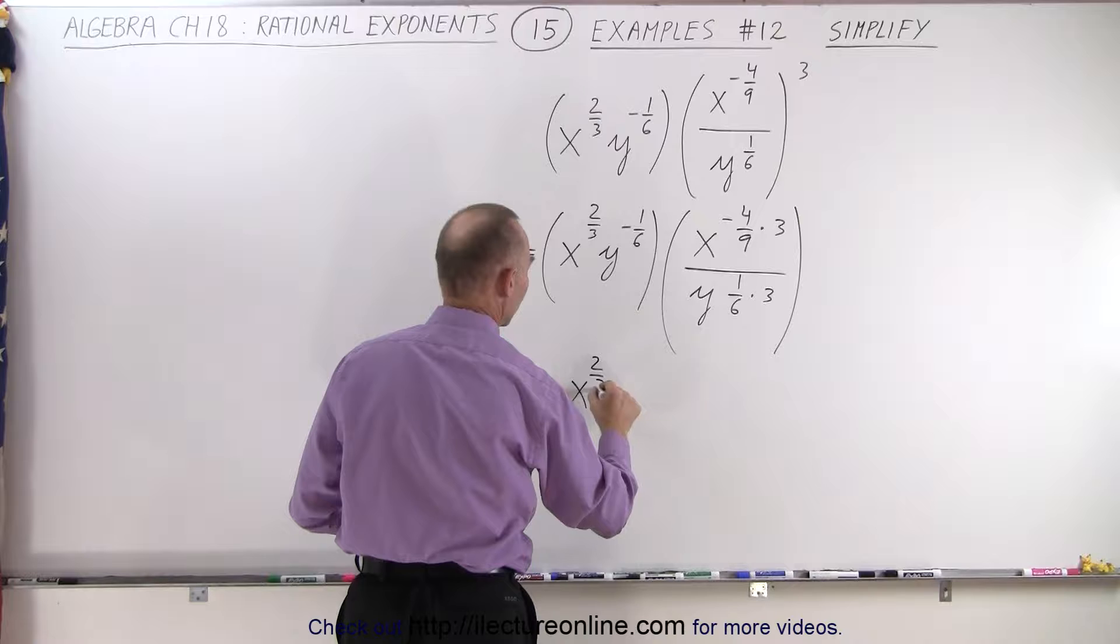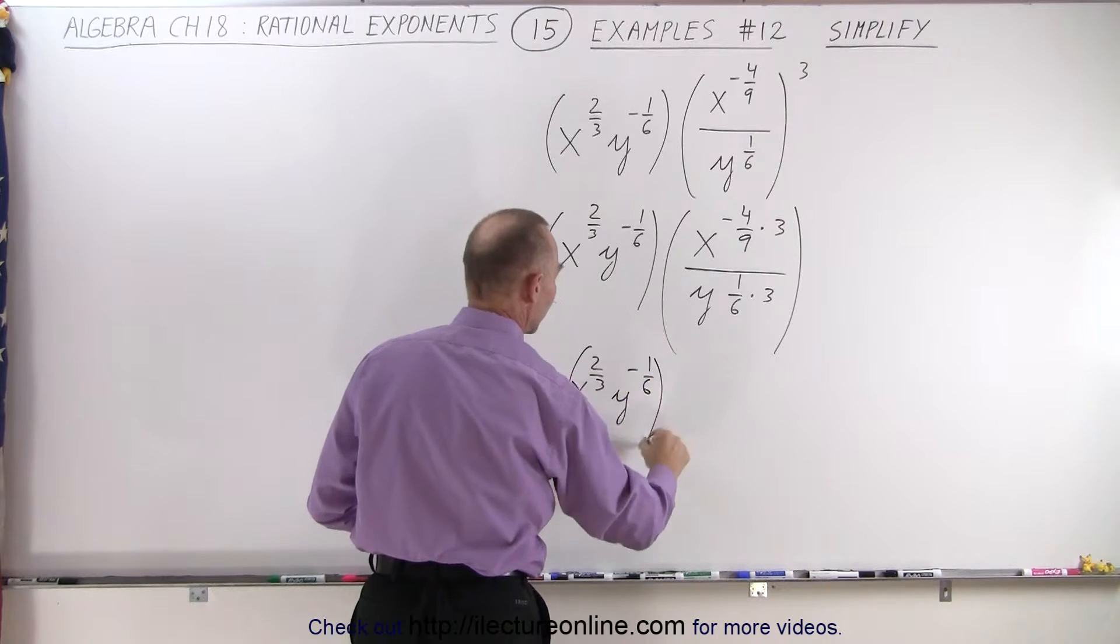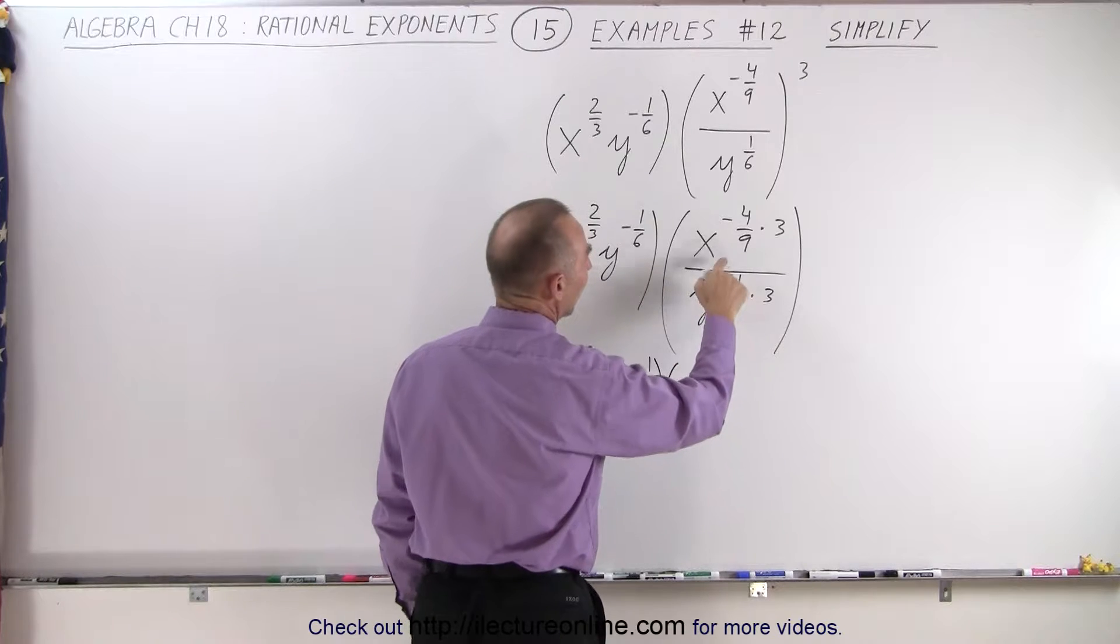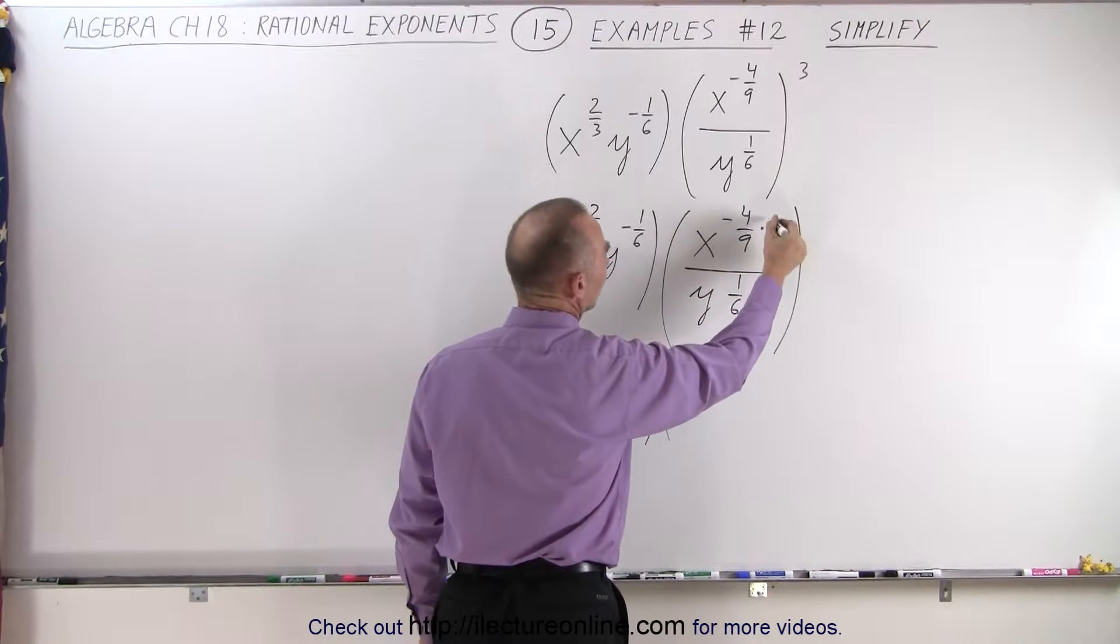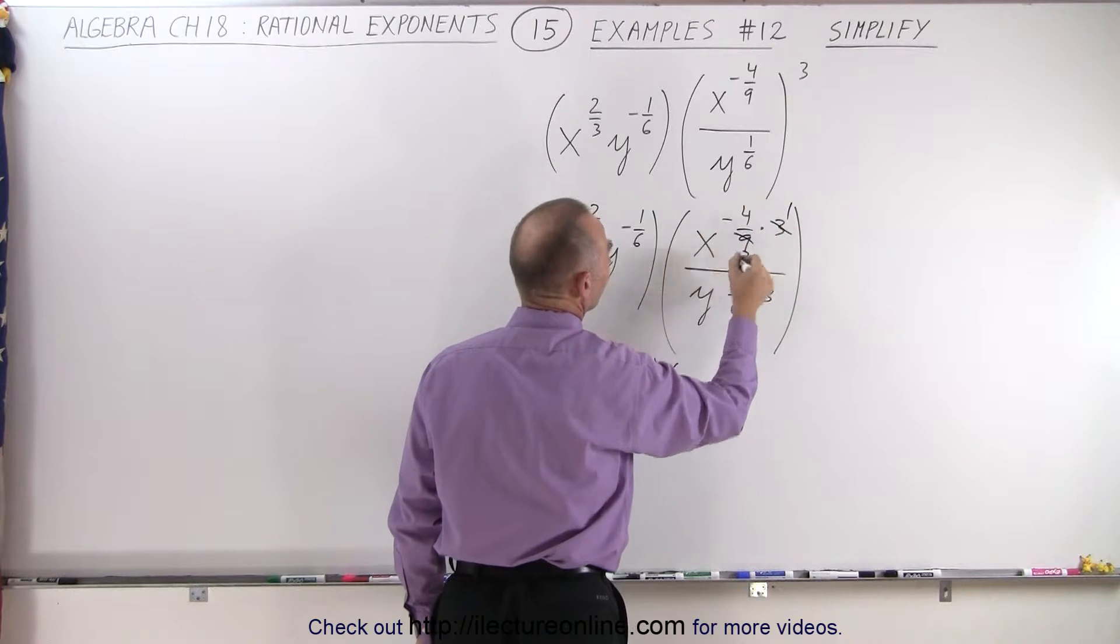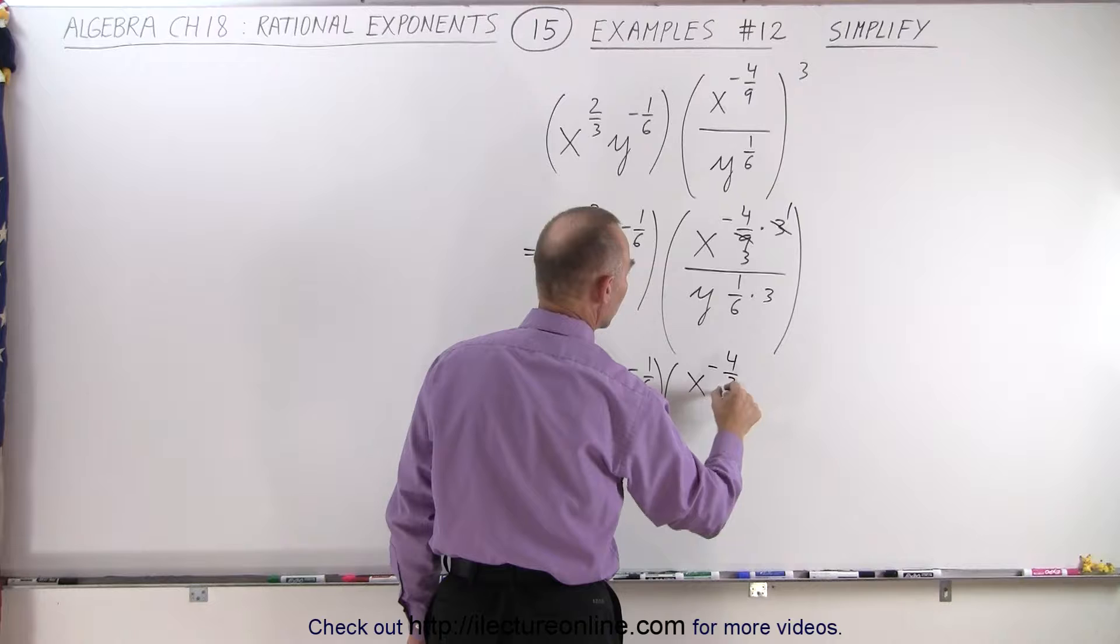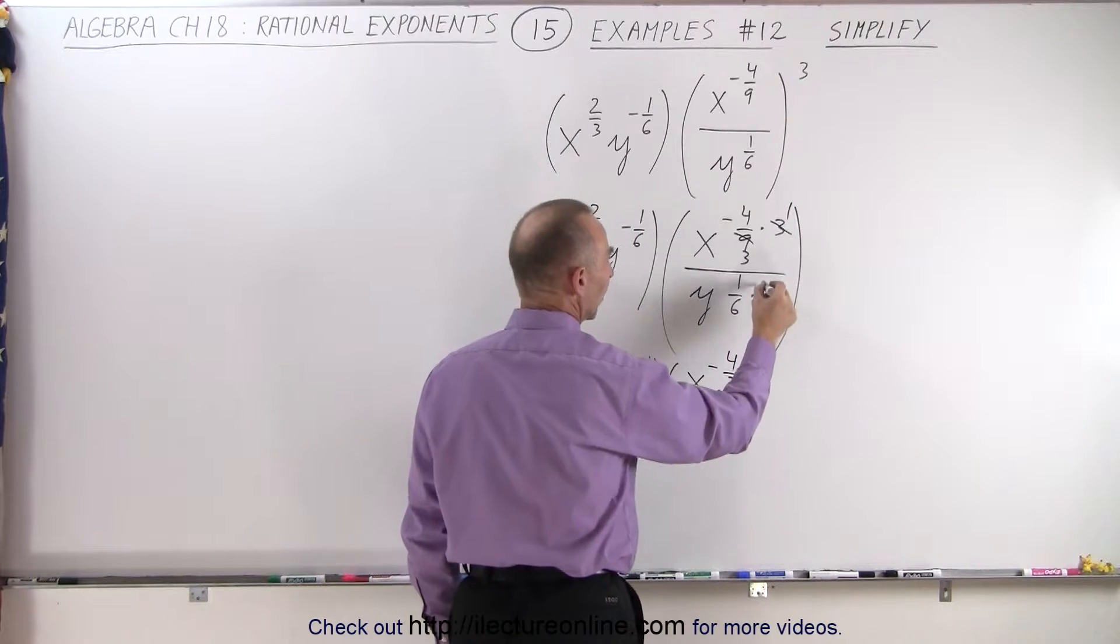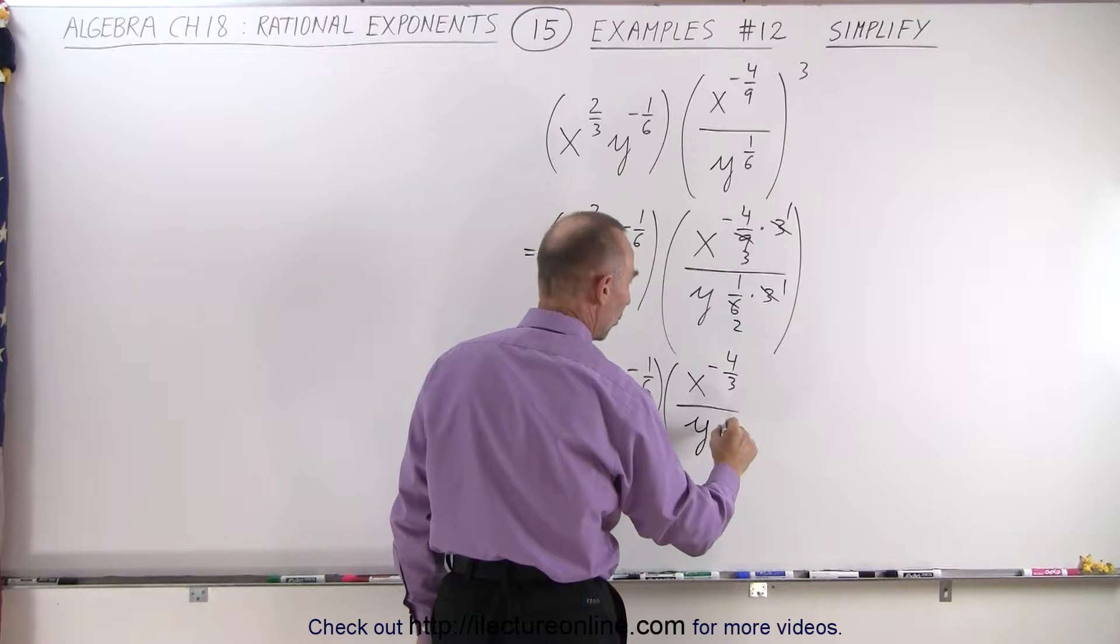We get x to the two-thirds times y to the minus one-sixth, and that's then multiplied times, here we have x to the minus four-ninths times three. Well, the three and the nine simplify, and this becomes x to the minus four-thirds in the numerator divided by, and here as well, the three and the six simplify, so we get y to the one-half.